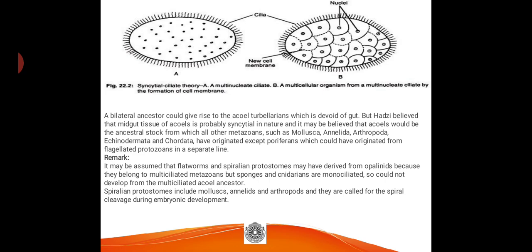Regarding further remarks on this theory: it may be assumed that flatworms and spiralian protostomes may have derived from opelinates because they belong to multi-nucleated metazoans. However, sponges and cnidarians are monociliated, so they could not develop from the multi-ciliated acoel ancestor. Spiralian protostomes include mollusks, annelids, and arthropods, named for the spiral cleavage during embryonic development.